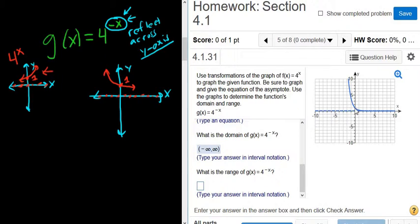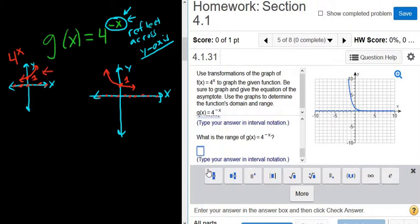What is the range? Well, for the range, you go from the bottom up. So that should be zero to infinity. And it's always a parenthesis here because you don't include the zero because there's an asymptote there. So zero to infinity. Check answer.